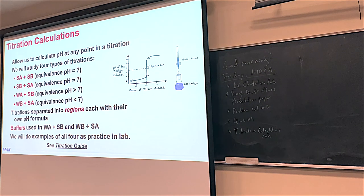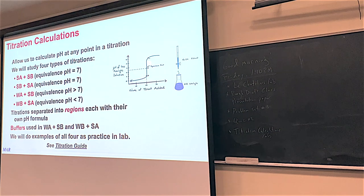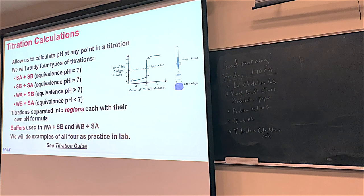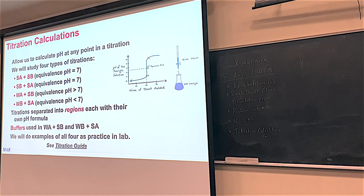You can tell right away from the equivalence point what kind of system you started with. The equivalence point is going to be the middle point of the more or less straight up-and-down part of the curve. Equivalence means that moles of what you started with equal moles of what you're adding. If this was a strong acid plus strong base, the equivalence point means moles of HCl equal moles of NaOH. Strong acids and strong bases, when they react, create pH-neutral ions — for example, HNO₃ makes nitrate and NaOH makes Na⁺, and those don't affect pH.